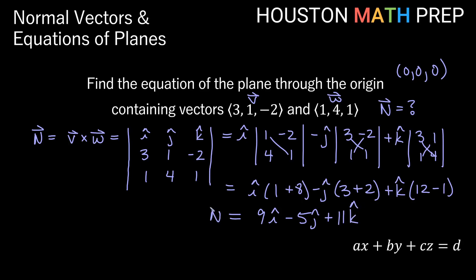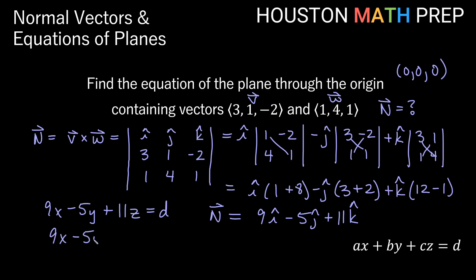Now that we have a normal vector to the plane, we can write the plane equation: 9x - 5y + 11z = d. Since the plane goes through the origin, we plug in (0, 0, 0) — every term becomes 0, so d = 0. This confirms that when ax + by + cz = 0, the plane goes through the origin. Our equation is 9x - 5y + 11z = 0.